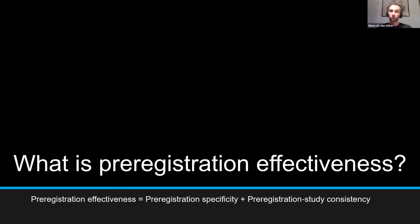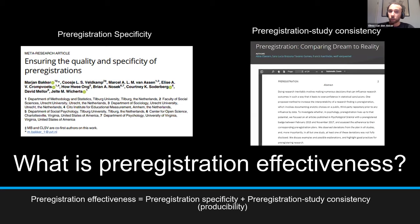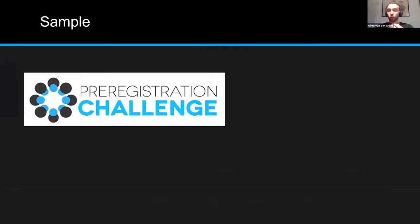These elements have been looked at individually before. Marjan Bakker looked at specificity of pre-registrations, and Alina Klaas and others looked at registration–study consistency. Both studies showed there's ample room for improvement. But they looked at these things separately. What we try to do is look at them together with a bigger sample. We looked at all pre-registrations we could find, for example from the pre-registration challenge — a challenge hosted by the Center for Open Science in which researchers got $1,000 if they published a pre-registered study. We had 180 papers that won a pre-registration challenge prize.